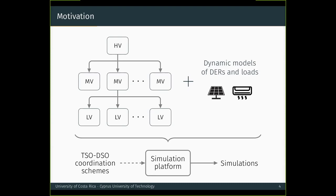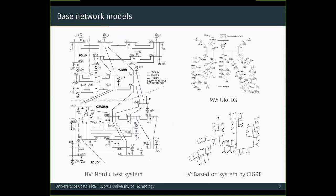As I mentioned, the bulk power system is built using existing network models, so I will proceed to describe them. For the high voltage, we employ the Nordic test system, which is limited by voltage stability and was recently recommended by a task force of the IEEE. For the medium voltage, we employ a system known as UKGDS, which is representative of the distribution networks in the United Kingdom. And finally, for the low voltage, we employ several networks, like the one shown in this diagram, which were derived from a test system recommended by CIGRE.